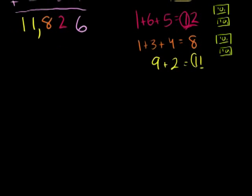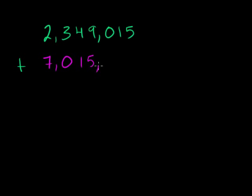Let me do a bunch more of these. Let's do a really daunting problem. Let's do something in the millions, just to show you that you can do any problem. So let's say we have 2,349,015 - let's throw a 0 in there, we have nothing in the hundreds place. And I want to add that to 7,000,000 - let's put a 0 there - 15,999. Let's add these two numbers.